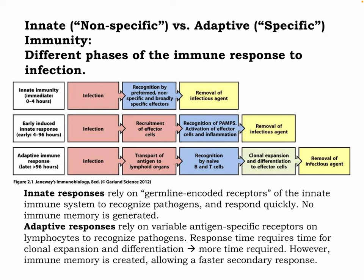This figure we saw last time. Innate responses rely on germline-encoded receptors to recognize pathogens and respond quickly, and no memory is generated. In adaptive immune responses, they rely on variable antigen-specific receptors on lymphocytes to recognize pathogens. The response time requires time for clonal expansion and differentiation — expansion of our B cell pool and T cells for that specific antigen.